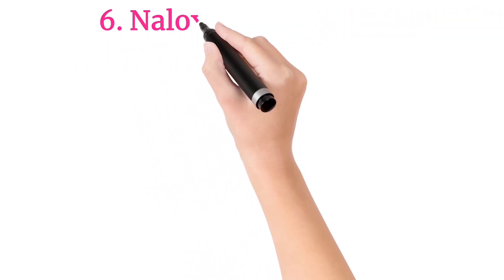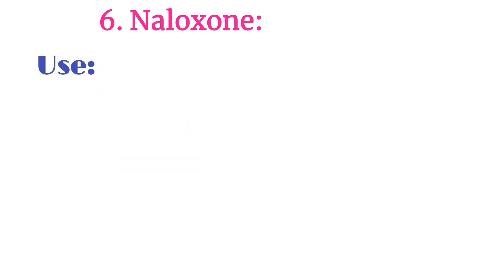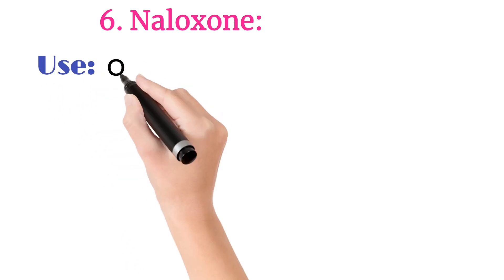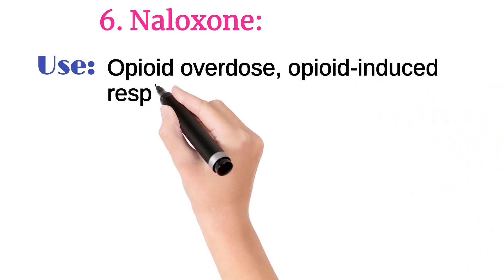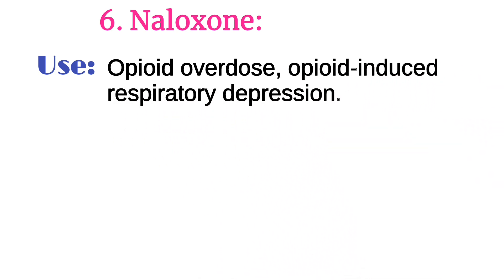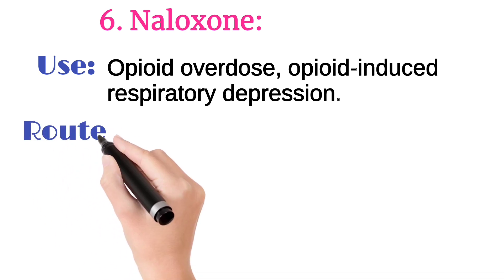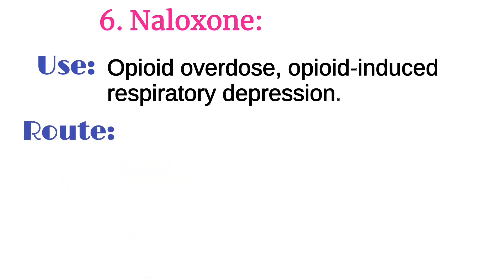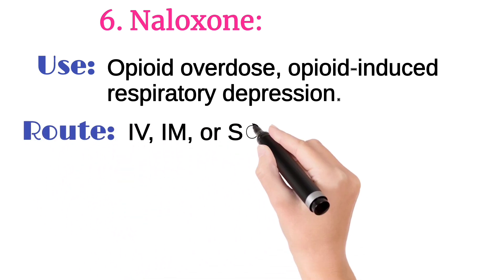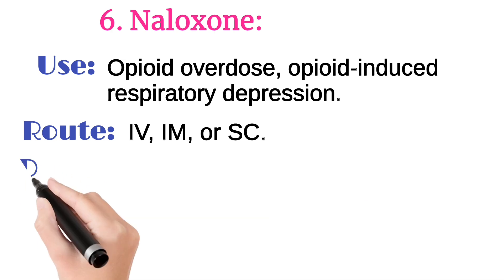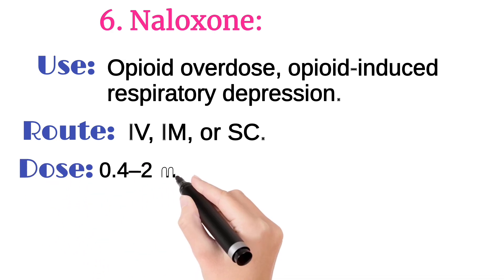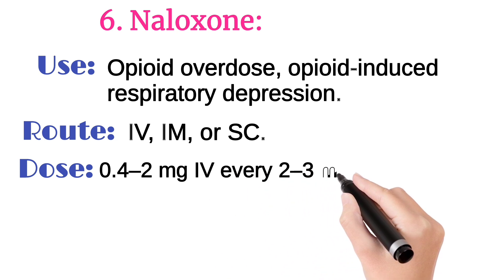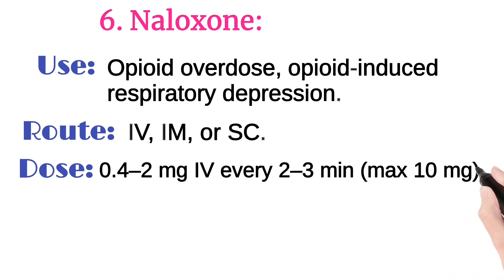Number 6 is naloxone. It is used in opioid overdose and respiratory depression due to opioids. It is injected intravenously, intramuscularly, or subcutaneously. Its usual dose is 0.4 to 2 mg intravenously every 2 to 3 minutes.